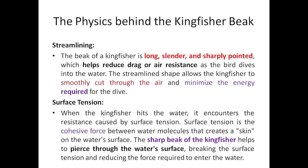Next is surface tension. When the kingfisher hits the water, it encounters surface resistance. Surface tension is the cohesive force between water molecules that creates a skin on the water surface. The sharp beak of the kingfisher helps to pierce and cut through this surface, breaking the surface tension and reducing the force required to enter the water.